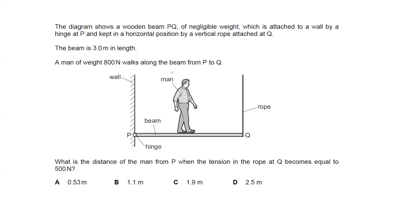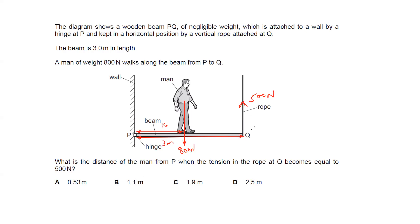The man is walking on the beam, and the weight of the man acts downward — 800 newtons. We have to calculate the distance between the man and the pivot, which is unknown (x). The total length of the beam is 3 meters, and the force of the rope is 500 newtons.